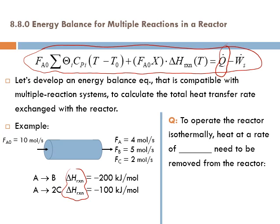The question is: to operate the reactor isothermally, we want T equals T₀. Therefore, we end up with delta H dot total equals Q dot. That means we have to remove heat at the same rate as it is released from the two reactions together. This is how we operate isothermally — heat at a certain rate needs to be removed from the reactor.